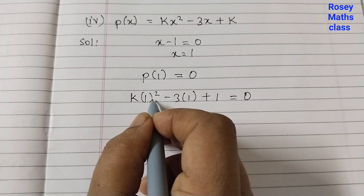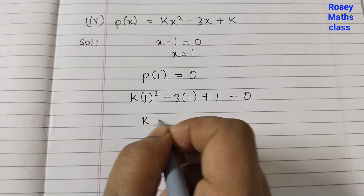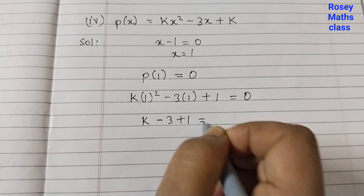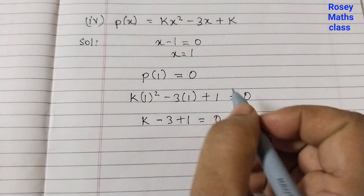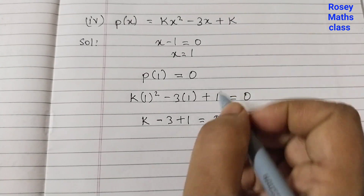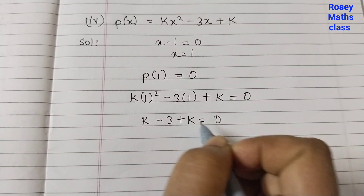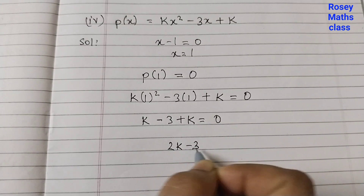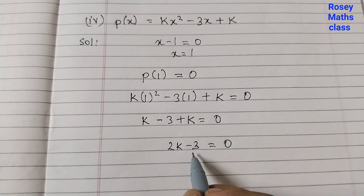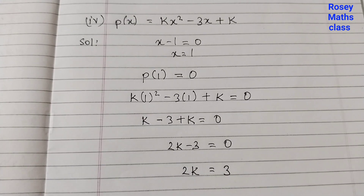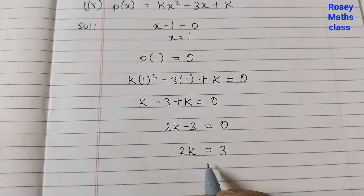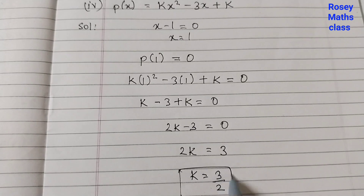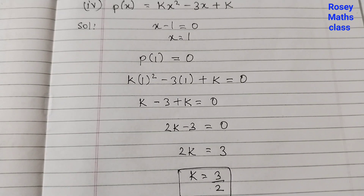Simplify: k times 1 is k, minus 3 plus k equals 0. Note: the last term is k, not 1 — k is the constant. So k plus k is 2k, giving 2k minus 3 equals 0. Taking 3 to the other side, 2k equals 3. Since 2 is multiplied by k, we divide by 2, giving k equals 3 over 2. And with this we are done with question number 3.